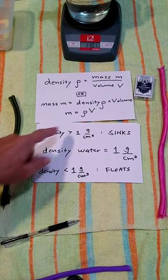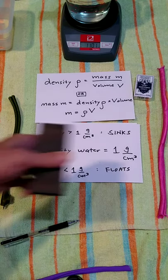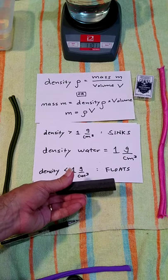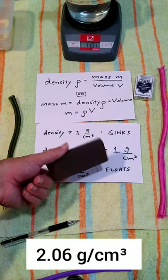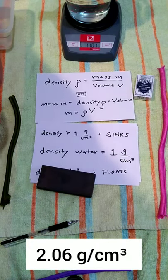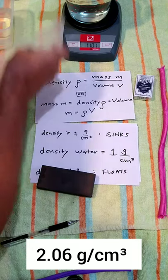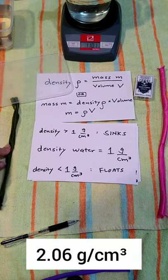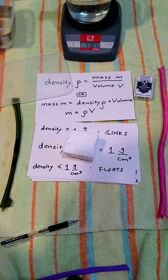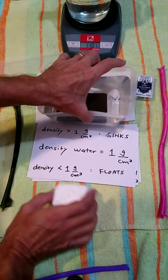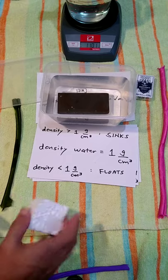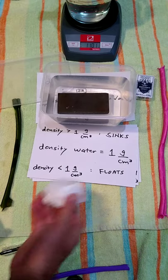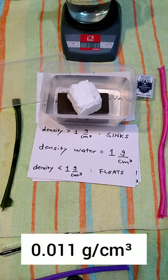If the density of the object is more than one it will sink. The sharpening stone has a density of 2.06 grams per cubic centimeter. When placed in water it sinks. The styrofoam has a density far less than one and of course it floats.